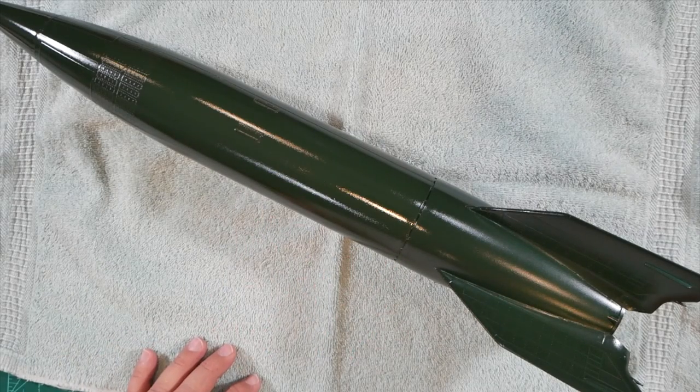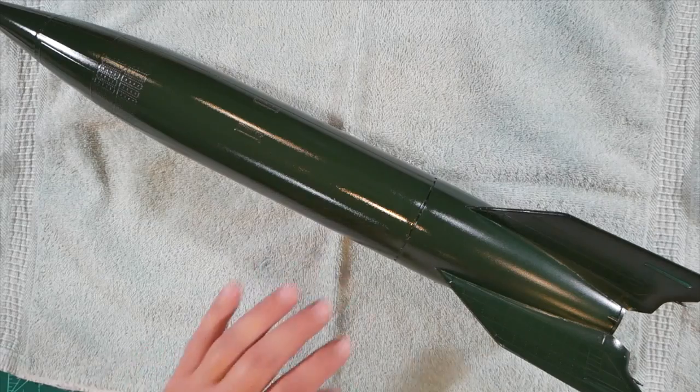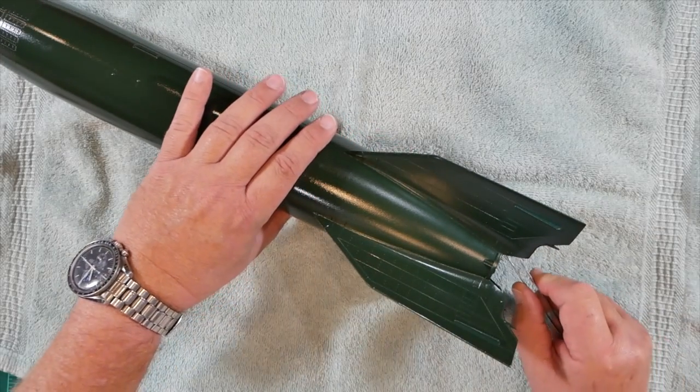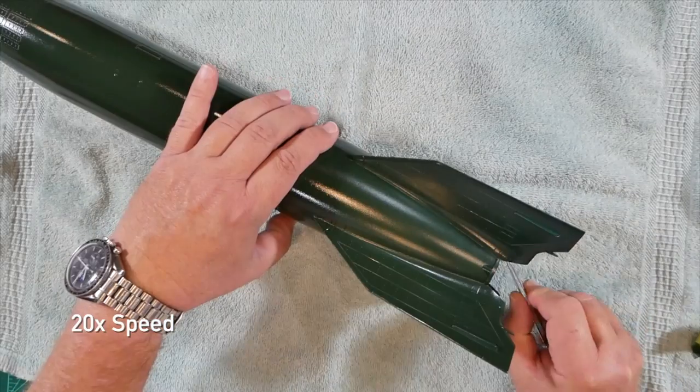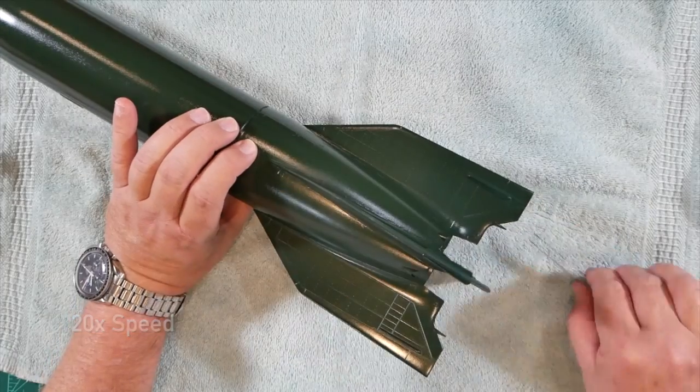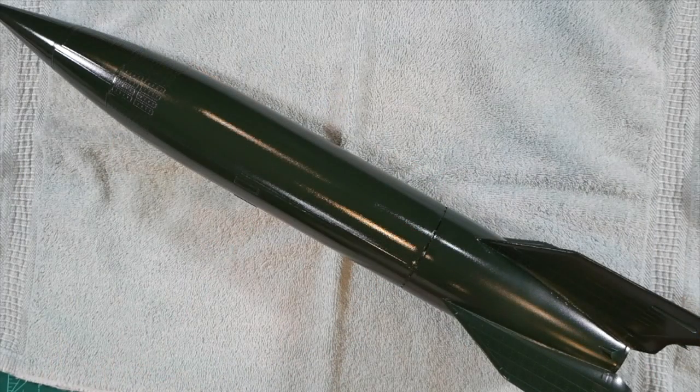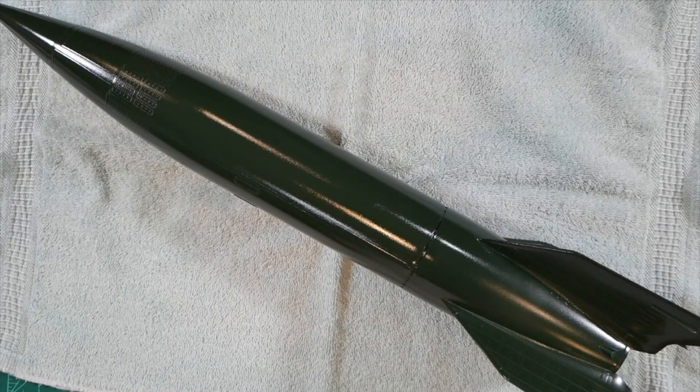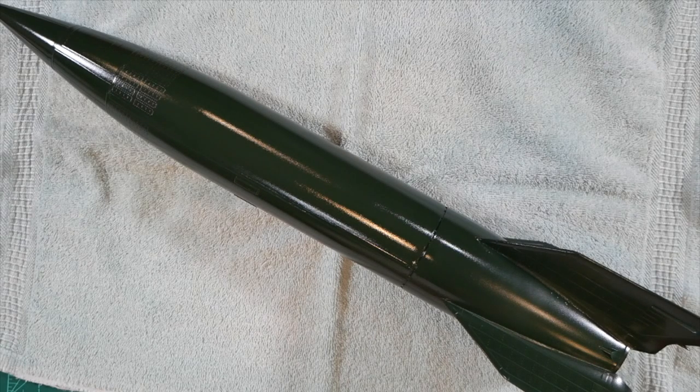The next thing we're going to do is remove the masking from the nozzle. Okay the masking is out of the nozzle. All the colors look good. We're now ready to decal the model which we'll do in our next step.